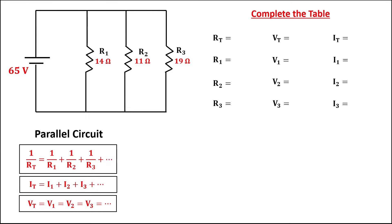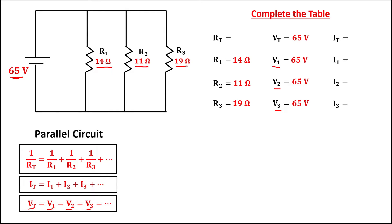to complete this table, we have 65 volts for the total voltage. Then for resistance 1, that's 14 ohms; resistance 2, that's 11 ohms; and resistance 3, that's 19 ohms. Then since in the parallel circuit all the voltages are equal, therefore voltage 1 is also 65 volts, voltage 2 is 65 volts, and voltage 3 is also 65 volts.